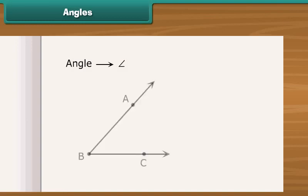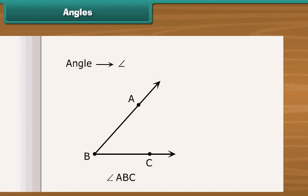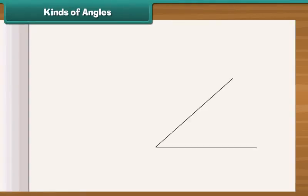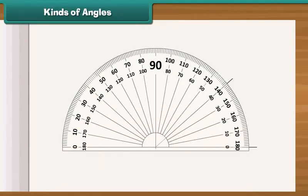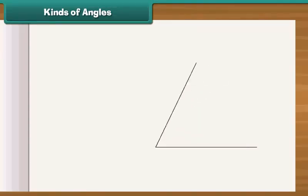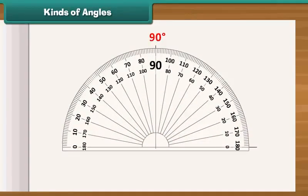This is an angle ABC. It is represented as Angle ABC. Here, B is a vertex. A is a point on one ray while C is a point on another ray. An angle can be measured by using a protractor. It is also used in drawing an angle of a given measure. An angle whose measure is 90 degrees is called a right angle.